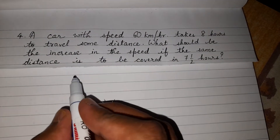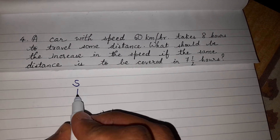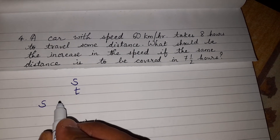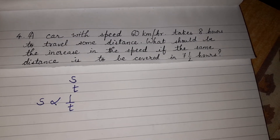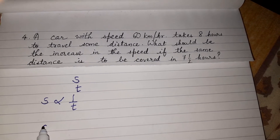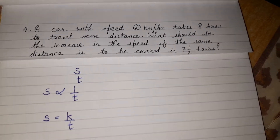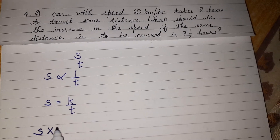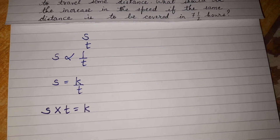If we take speed as s and the time taken as t, we can say that speed is inversely proportional to the time taken. So we can write this as s is equal to k over t, meaning s into t is equal to k, where k is the constant of proportion.